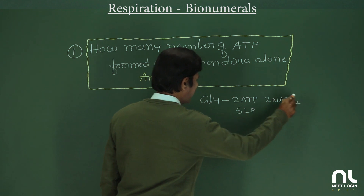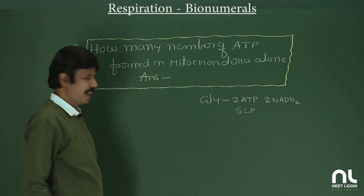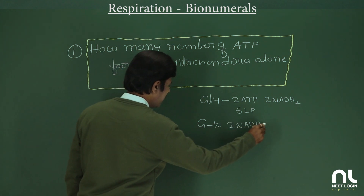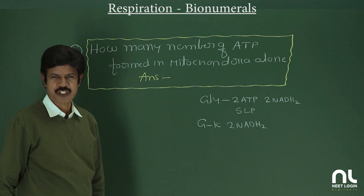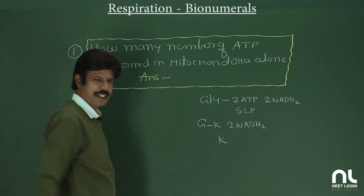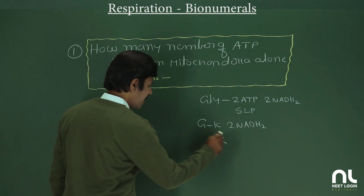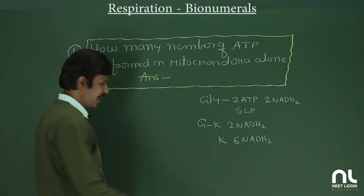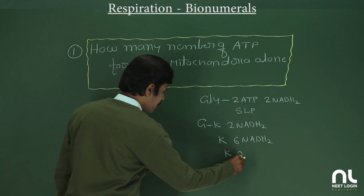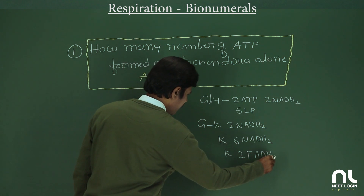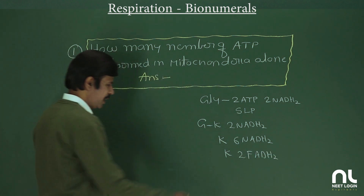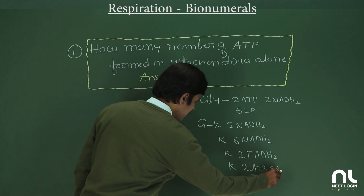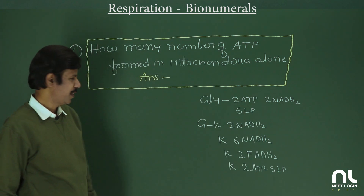In the link reaction (between glycolysis and Krebs cycle), two NADH are formed. In the Krebs cycle, six NADH and two FADH2 are produced, along with two ATP via substrate level phosphorylation.